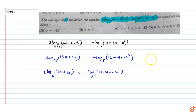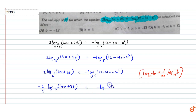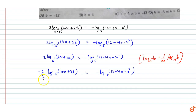Using the formula that log B to the base A^M equals (1/M) log B to the base A, we apply this to convert the base. This gives (2 / (-2)) log (Bx + 28) to the base 5 equals minus log (12 minus 4x minus x squared) to the base 5, which simplifies to minus log (Bx + 28) to the base 5 equals minus log (12 minus 4x minus x squared) to the base 5.